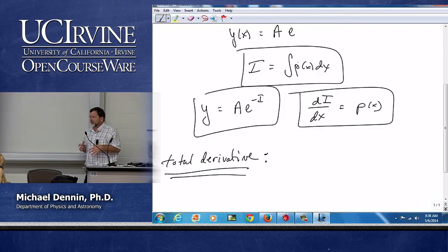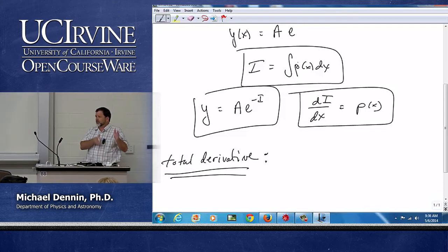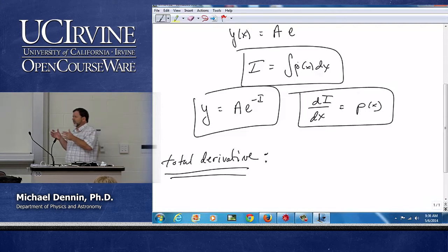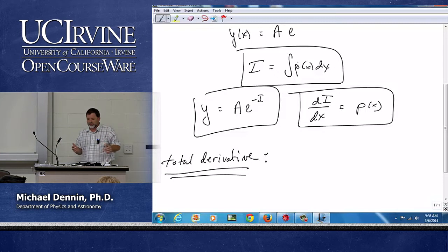Students often complain, oh, that was a trick problem. Most of physics is trick problems. You want to have the list of tricks that we use. So when you're faced with a new problem, you can go through which one of these tricks is the right one to use.